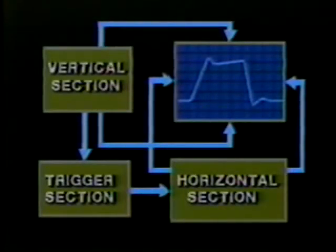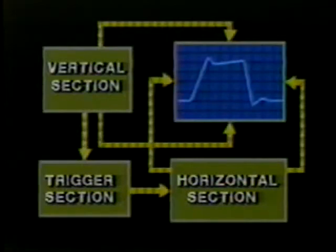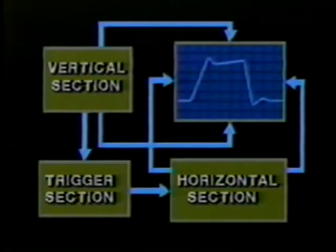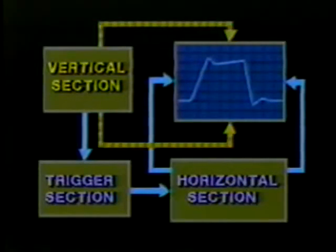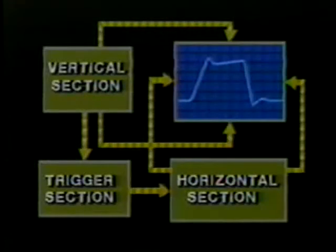In this program we'll use a block diagram of a typical oscilloscope to show you how an oscilloscope displays both vertical and horizontal information. We'll illustrate the operation of major functional blocks and how they relate to front panel controls, and we'll use a Tektronics 2235 as our demonstration oscilloscope. The best way to visualize how an oscilloscope works is to split the display into two parts: the vertical portion and the horizontal portion.